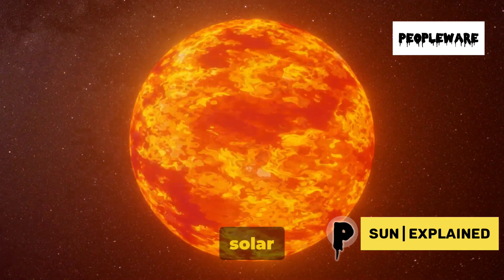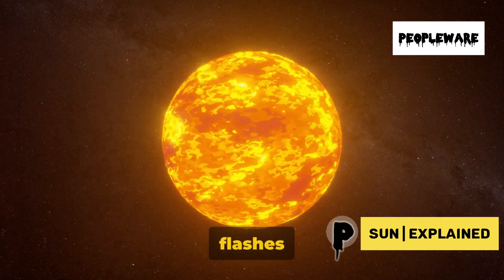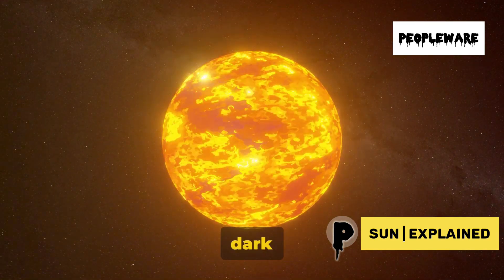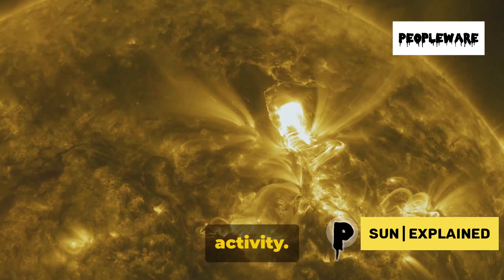This space weather is marked by solar flares and sunspots. Solar flares are sudden, intense flashes of brightness, while sunspots are dark areas on the Sun's surface. Both are signs of intense magnetic activity.